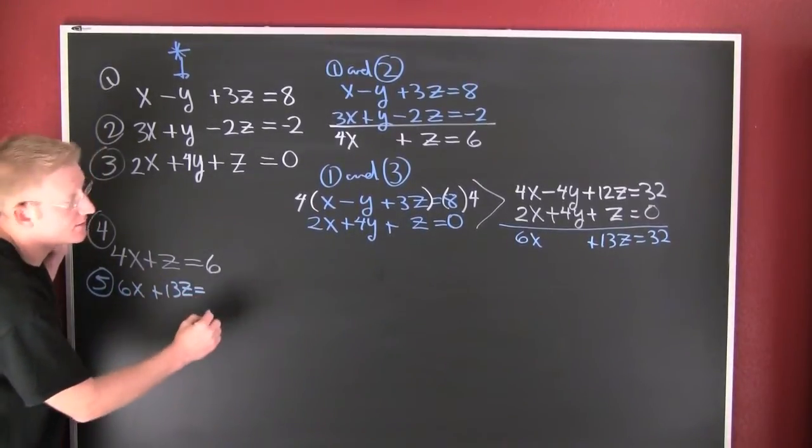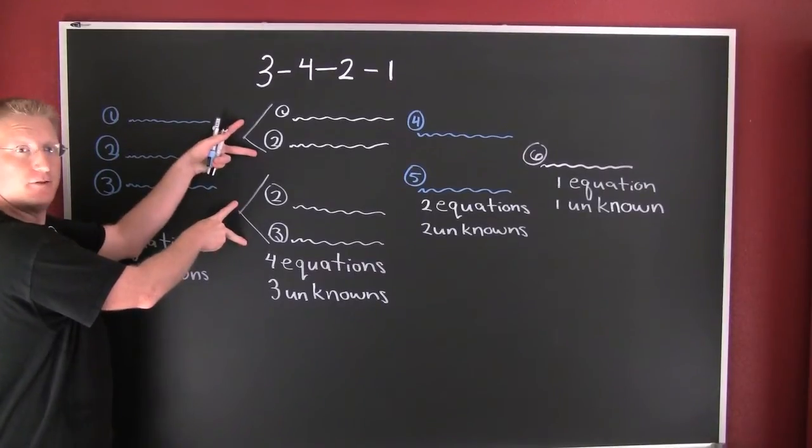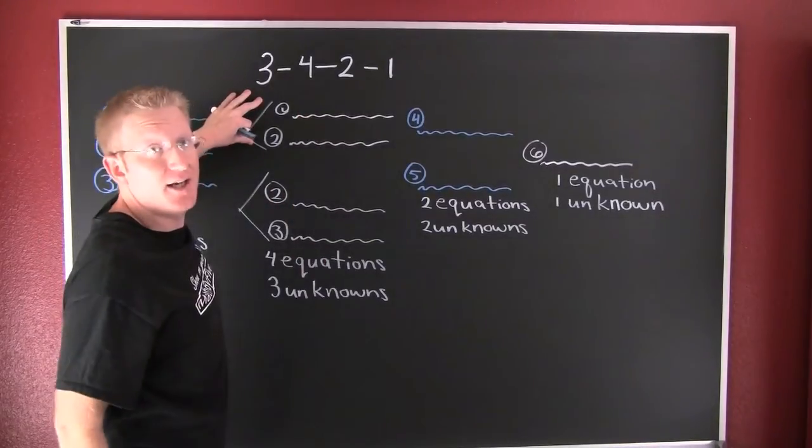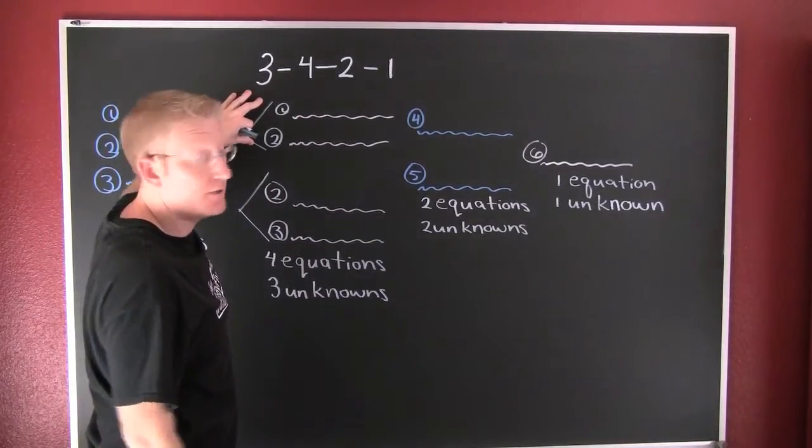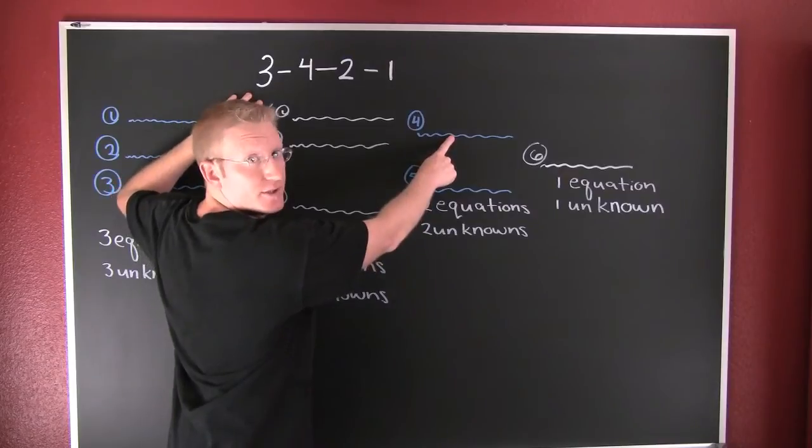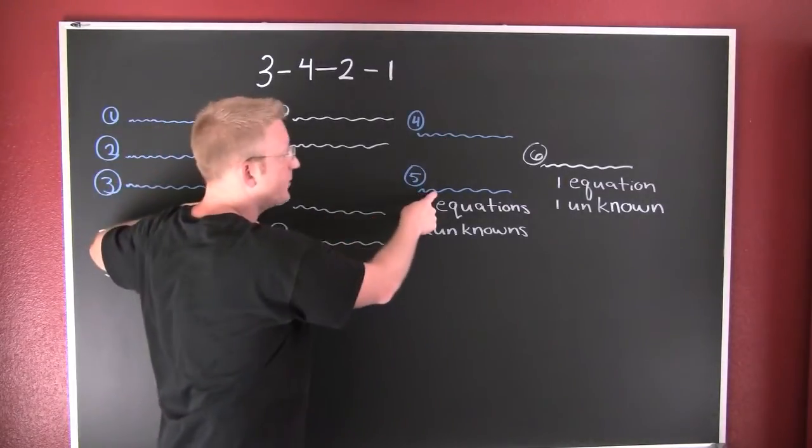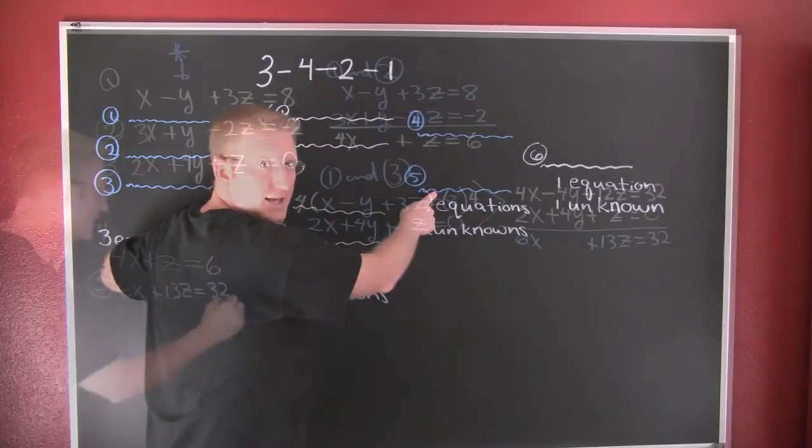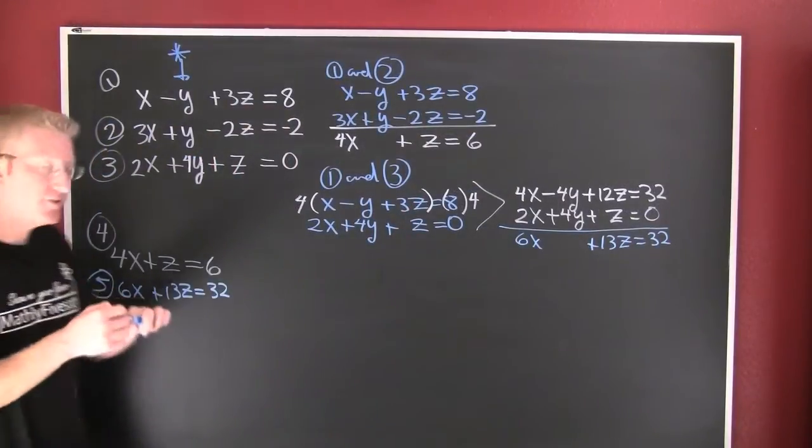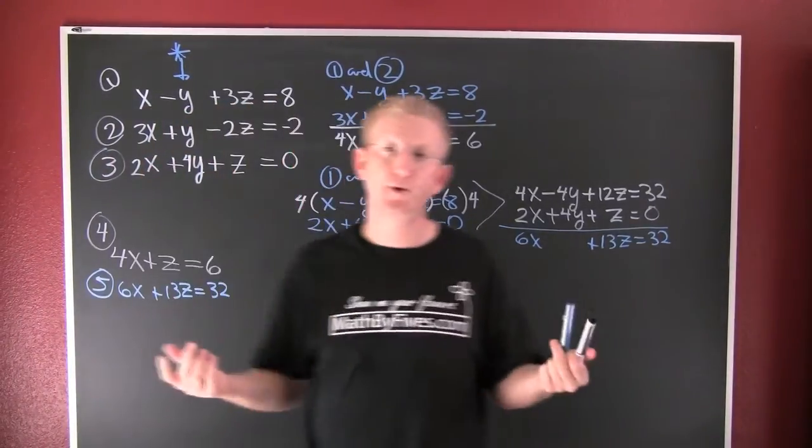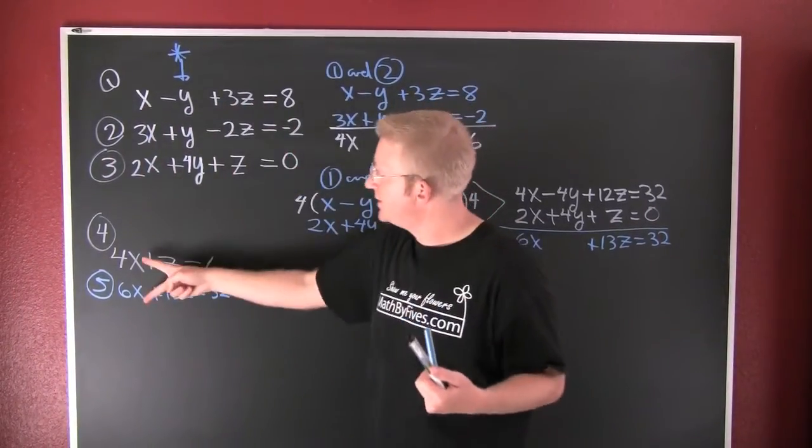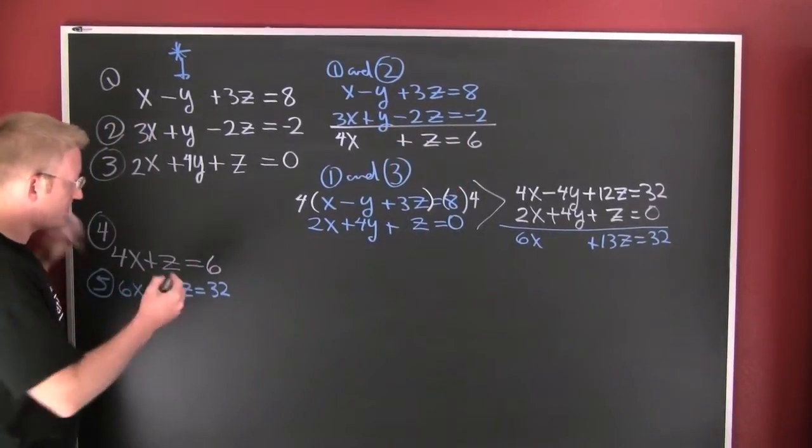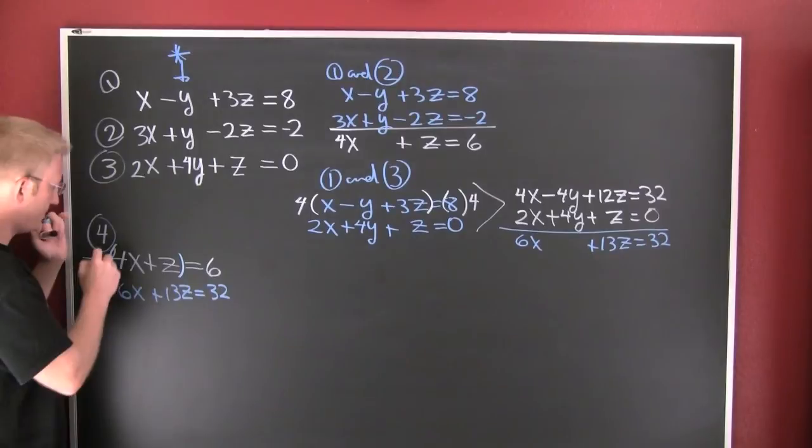I'm gonna separate it off into pairings. In each one of these pairings I eliminated the same variable. Equation four is only in terms of X and Z, and equation five is only in variables X and Z. Now what do you do? You have choices. You can eliminate your X's or you can eliminate your Z's. I'm gonna multiply the top one by minus 13.